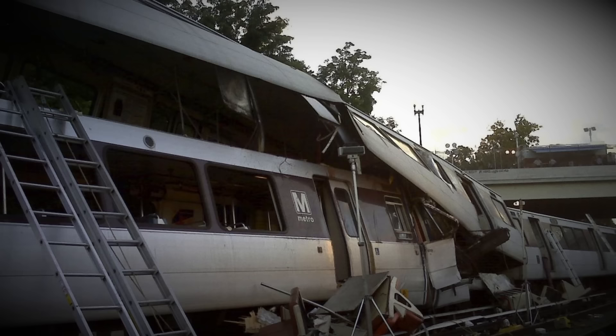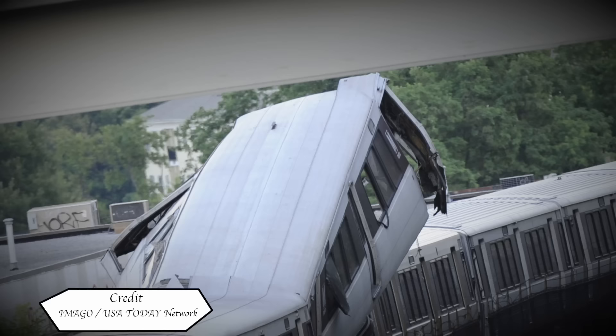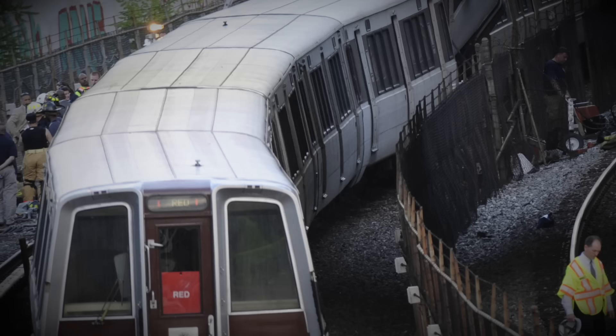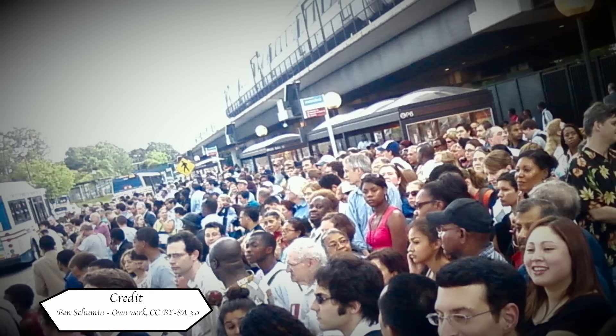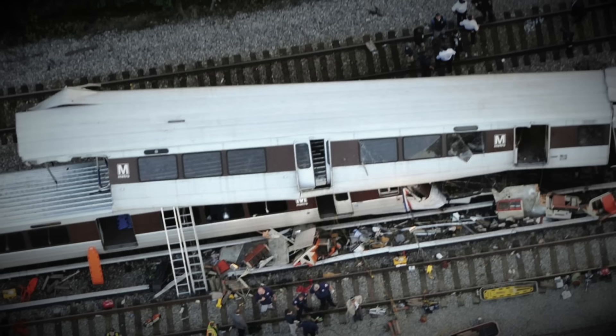Soon after, the first 911 calls started coming in. The controller noticed traction current going out in the area. He attempted to contact train 112, but no reply. At around the same time, the operator of 214 was making his way to the rear of his train to investigate the impact. He radioed into control and informed them of the collision. The controller got a track worker to go to the accident site to confirm the report, and sadly he saw two mangled trains. The controller then held all trains in stations on the red line. Fire engines and ambulances were dispatched to the scene.